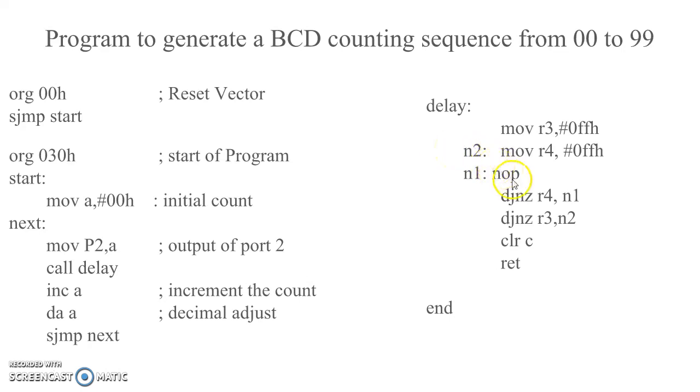The count is decremented and the loop repeats till the count goes to 0. There are two nested loops creating this delay routine.